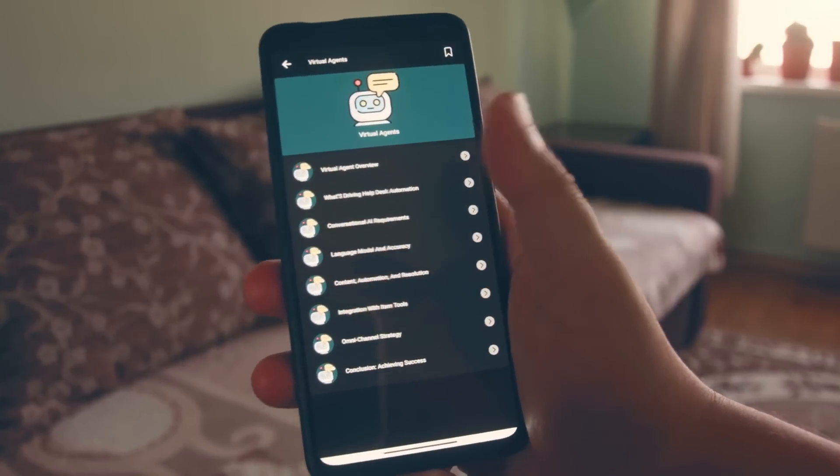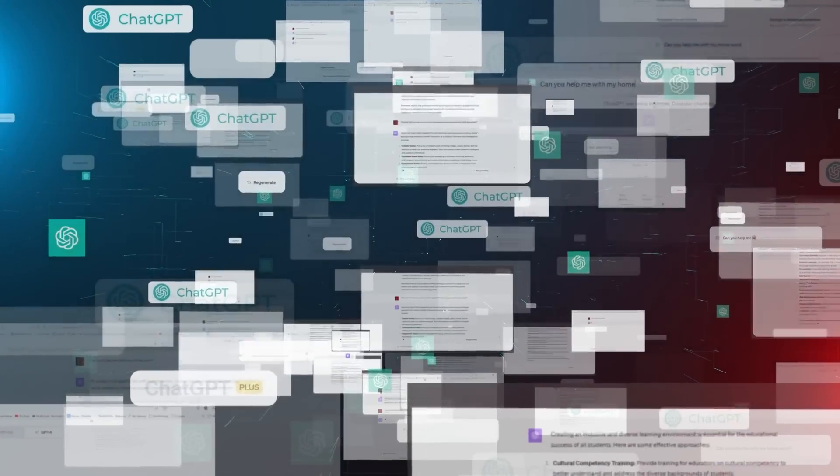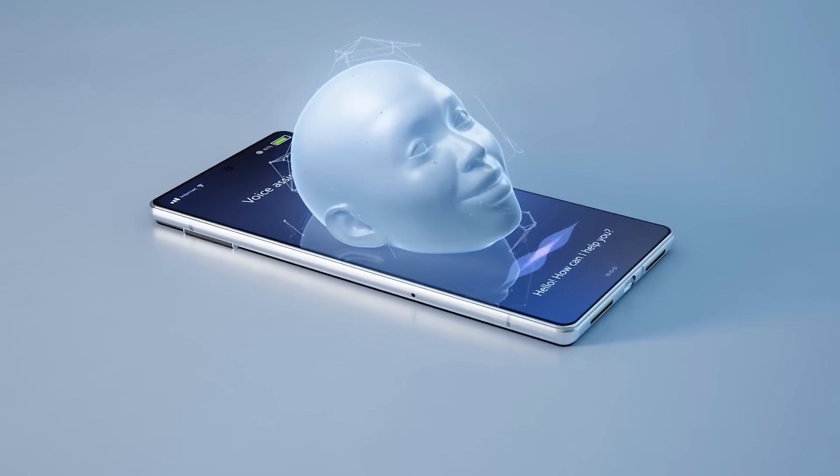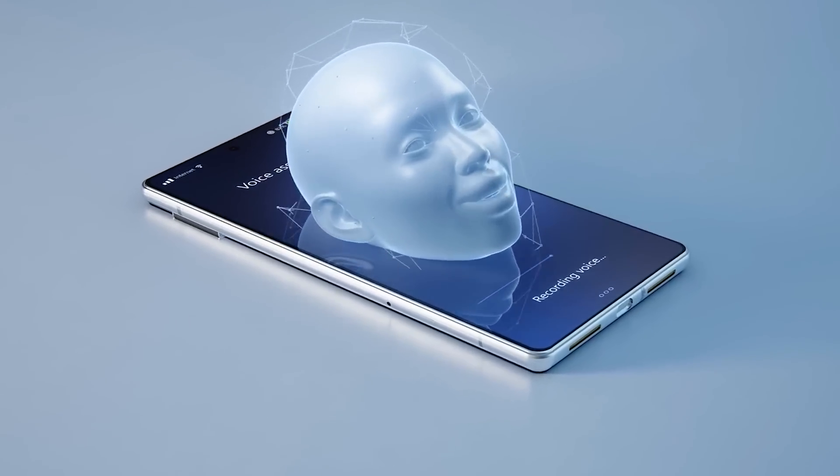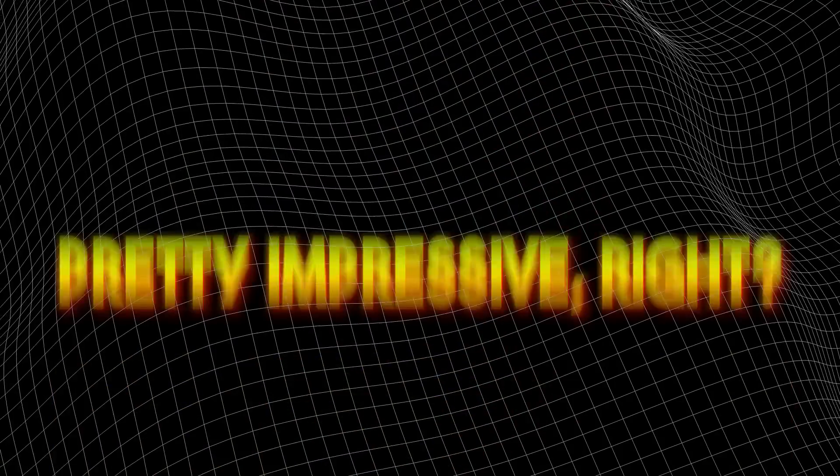This means the AI can understand and respond to complex back-and-forth interactions, a huge deal for chatbots, virtual assistants, and any application where context is key. In some cases, this self-taught AI even outperformed models that were trained with human help. That's like an athlete breaking records without a coach. Pretty impressive, right?